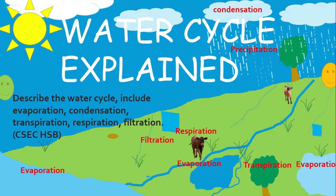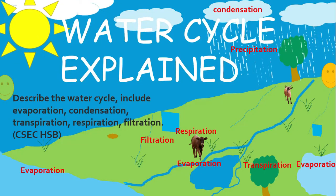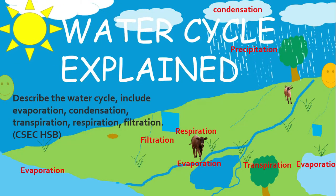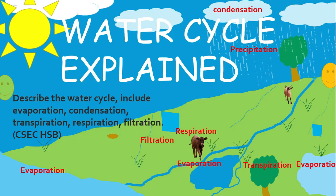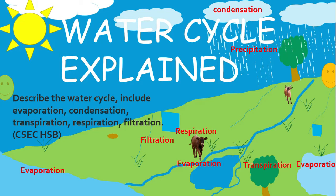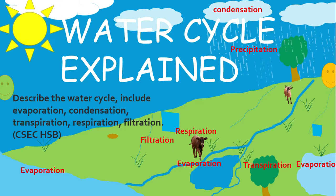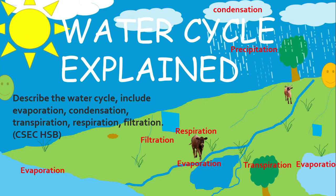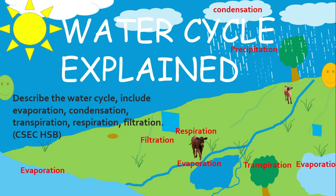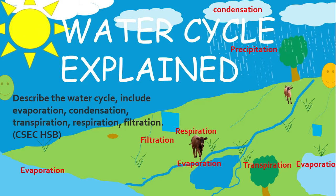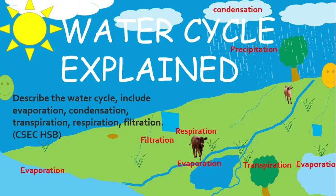Water cycle explained. Describe a water cycle including evaporation, condensation, transpiration, respiration, and filtration.